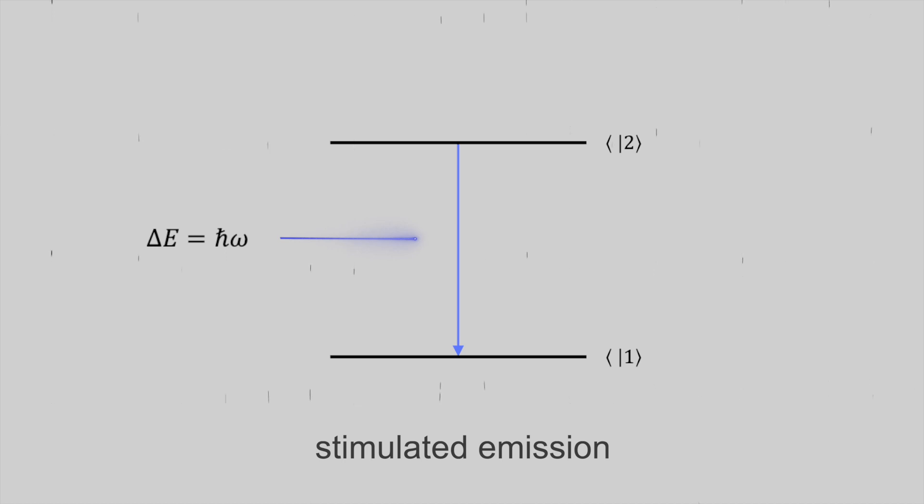And the energy that's set free transfers to the electromagnetic field, creating a new coherent photon with a frequency, polarization, and direction of travel that are all identical to the photon of the incident wave. So this is a photon that's coherent with the incoming photon. So in the simplest terms, this is basically what a laser is.